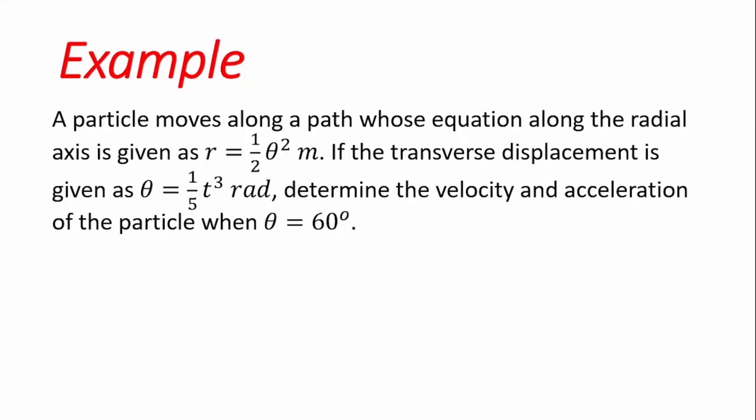For this case, we assume that time t is in SI units, that is seconds. To solve this problem, we need to first identify what has been given and what is required. We were given the radial component r = ½θ², and the transverse component θ = (1/5)t³. The radial component is a function of the angular component, which is also a function of time. We are required to find the velocity and acceleration when θ = 60 degrees.